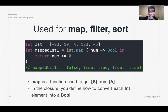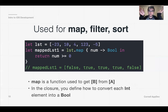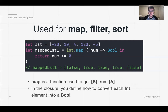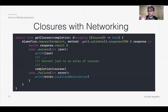Another case for closures is higher-order functions like map, filter, or sort. For example, if you want to map a list and return true if a number is greater than or equal to zero, you do list.map with a closure that takes a number and returns a boolean. Since map is generic, you pass in a number and return 'number >= 0'. So negative 23 would return false. This is how closures work with networking.